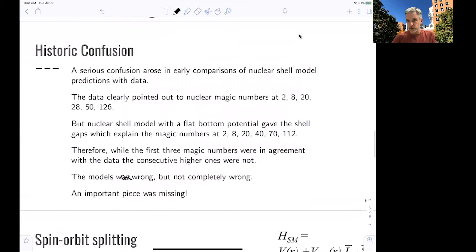There was some historic confusion in this. It came from the fact that while the experimental data pointed to nuclear magic numbers of 2, 8, 20, 28, 50, and 126, if you just think about a flat bottom potential, you find magic numbers which are 2, 8, 20, 40, 70, and 112. And those are typically not in agreement. Therefore, it seemed like this shell model worked, but not really. We found agreement here, but then disagreement in the higher part of the magic numbers. So something was missing.